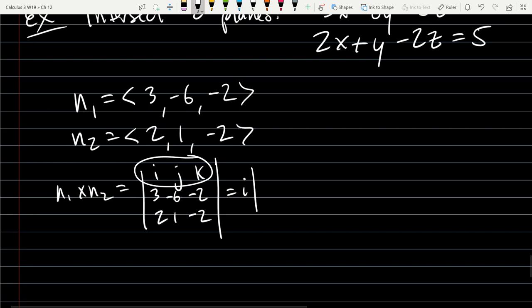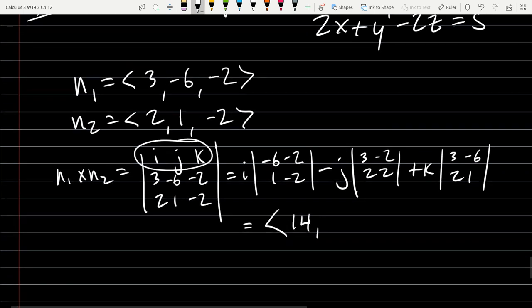So row 1, we have -6, -2, 1, -2, minus j, 3, -2, 2, 2, plus k, 3, -6, 2, 1. Alright, 12 plus 2 is 14. Careful with the double negatives, that's how we got positive there. -6 plus 4. K term is 3 plus 12.